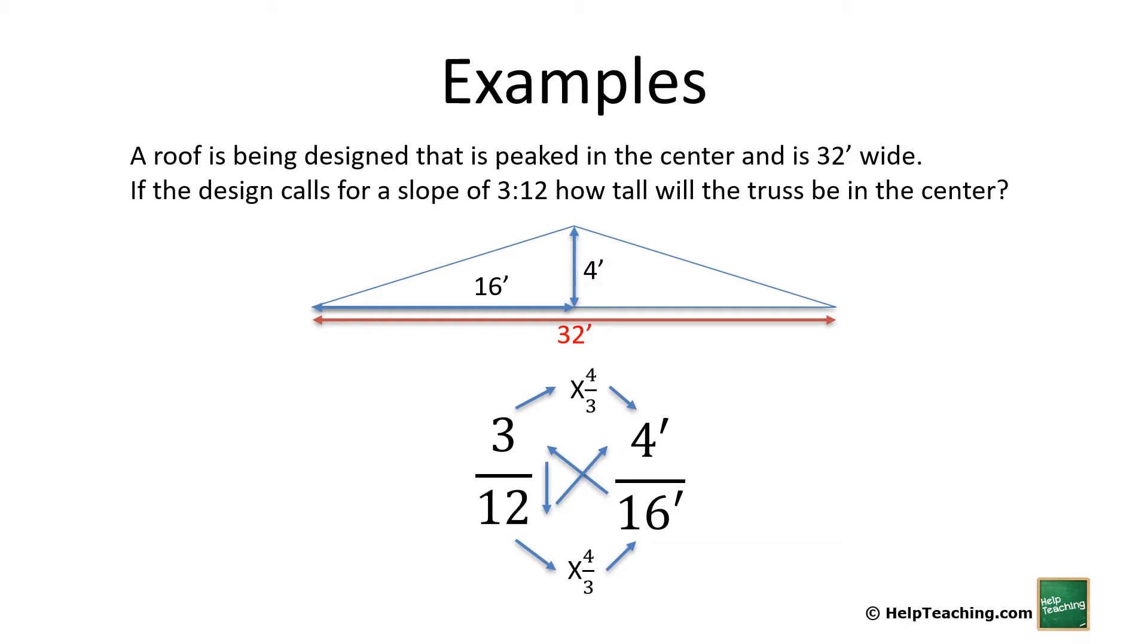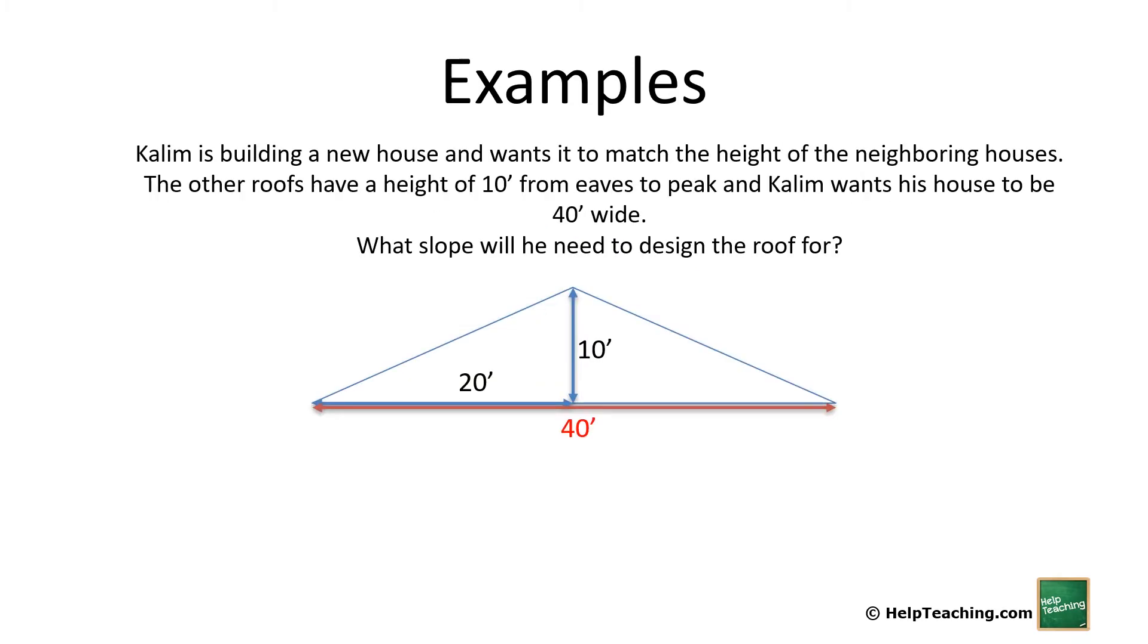In this example, Kalim is building a new house and wants it to match the height of the neighboring houses. The other roofs have a height of 10 feet from eaves to peak and Kalim wants his house to be 40 feet wide. What slope will he need to design the roof for? So in this case we're trying to find slope, not the other way around. So we can set this up as a ratio of 10 feet to 20 feet rise over run is something to 12, and so then what we need to find out what that is. We can use cross multiply and divide again: 12 times 10 divided by 20 equals 6.